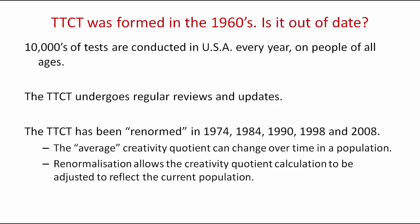The Torrance Test of Creative Thinking has also been re-normed five times in its history. This is required because the average creativity quotient can change over time in a given population. Re-normalization allows the creativity quotient calculation to be adjusted to reflect the current population. For example, if the average value is, say, x in 1974, but that value is now x plus 5 in 1984, when it is re-normalized, we can therefore change what we consider to be normal in 1984 so that it reflects the population of 1984 and not 1974.